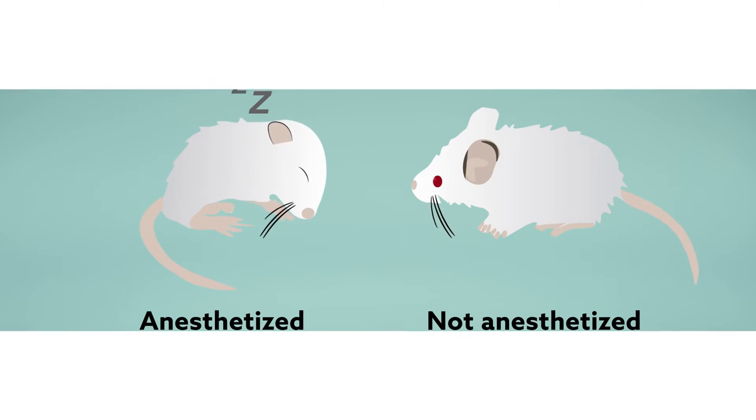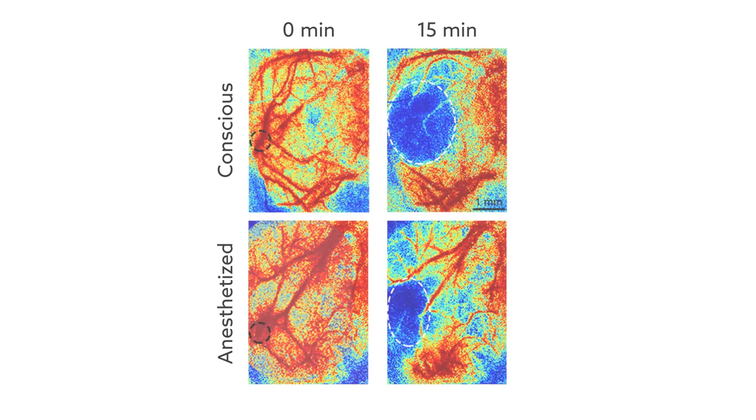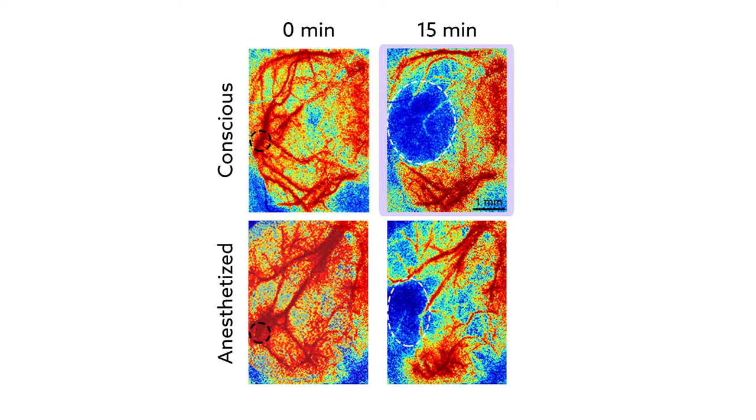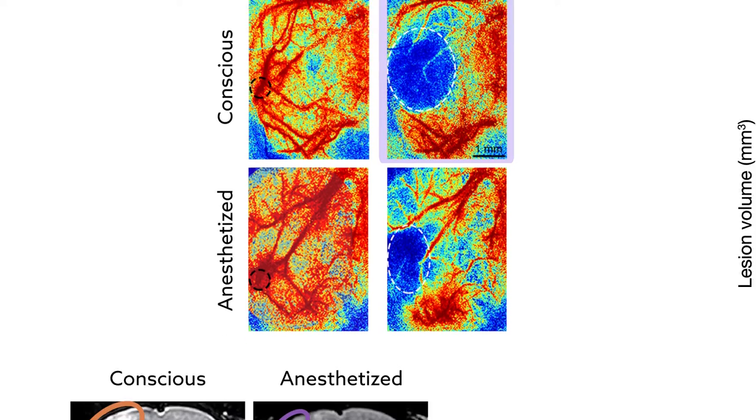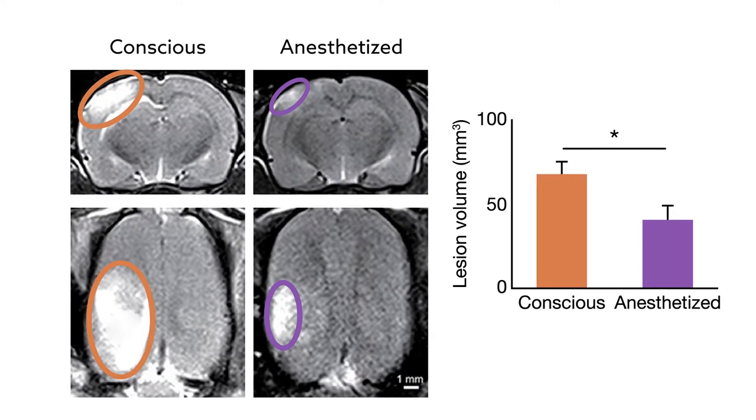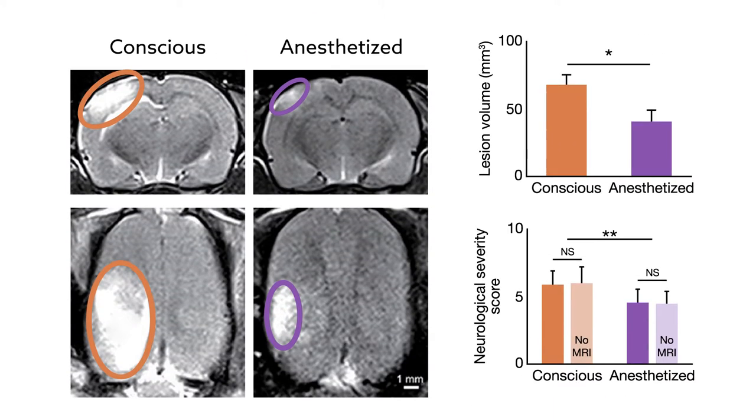While clots formed within 15 minutes in both sets of animals, real-time laser speckle imaging revealed that more of the brain experienced a big drop in blood flow when rats were conscious. Brain lesions were larger in rats without the drug, and those animals were also more neurologically impaired.